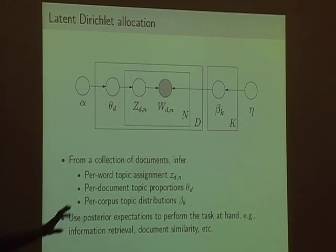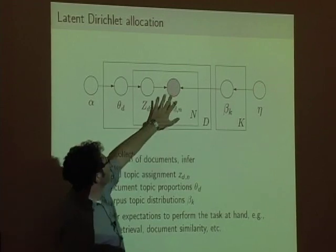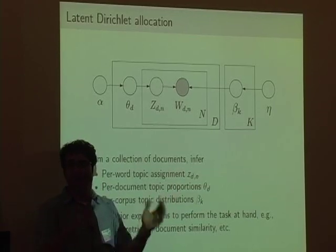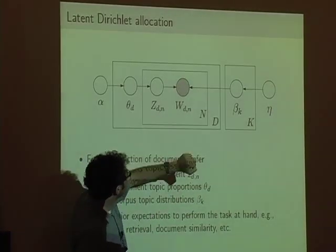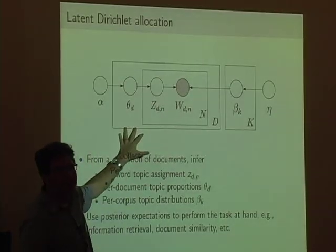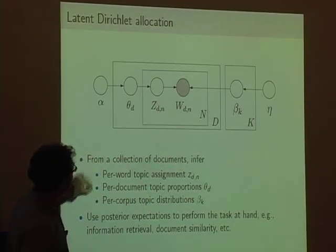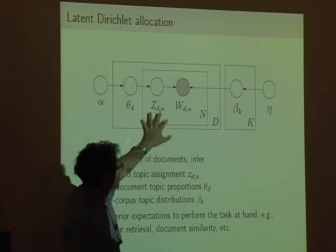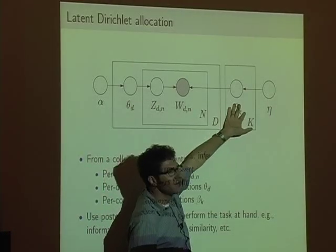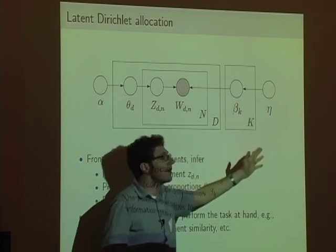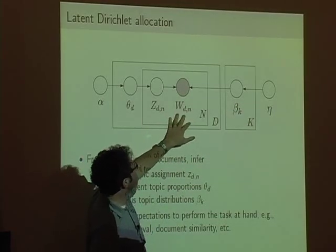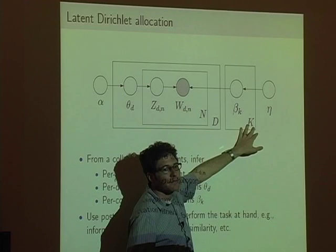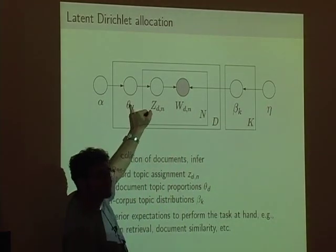We only observe the words in each document — that's the only shaded node. Our goal is to infer all this other structure around it, essentially reversing the generative process. For each document we want the per-word topic assignment, the per-document topic proportions, and crucially the distributions over words that generated this. You can think of this as reducing the dimension of the document collection from the number of words down to K-dimensional vectors.